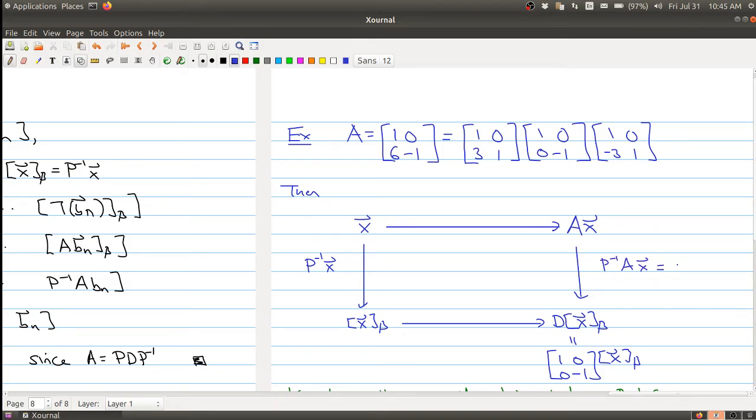Because this will give me the B coordinate of A, X. So this map commutes. Basically, you can go this way or you can go this way. The thing is, if you use this map, then moving across is just given by a diagonal map.